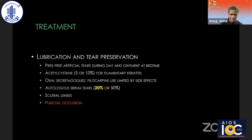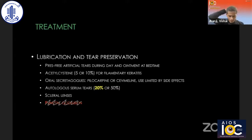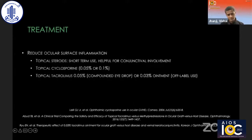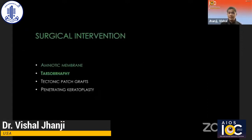You will find different opinions on whether punctal occlusion should be performed for GVHD patients with dry eyes. If you follow the GVHD core group — run by UIC every two years — you will understand that punctal occlusion is not indicated in these patients. I do not occlude the puncta. We want the inflammatory material from the eye surface to wash away, not remain on the eye. Once you occlude the puncta, it becomes difficult to control the inflammation. Topical steroids short-term are helpful for conjunctival involvement. I use a lot of Restasis — cyclosporine A 0.05% or 0.1% if you can get it compounded. I also have access to topical tacrolimus ointment, which is supposed to help as well.